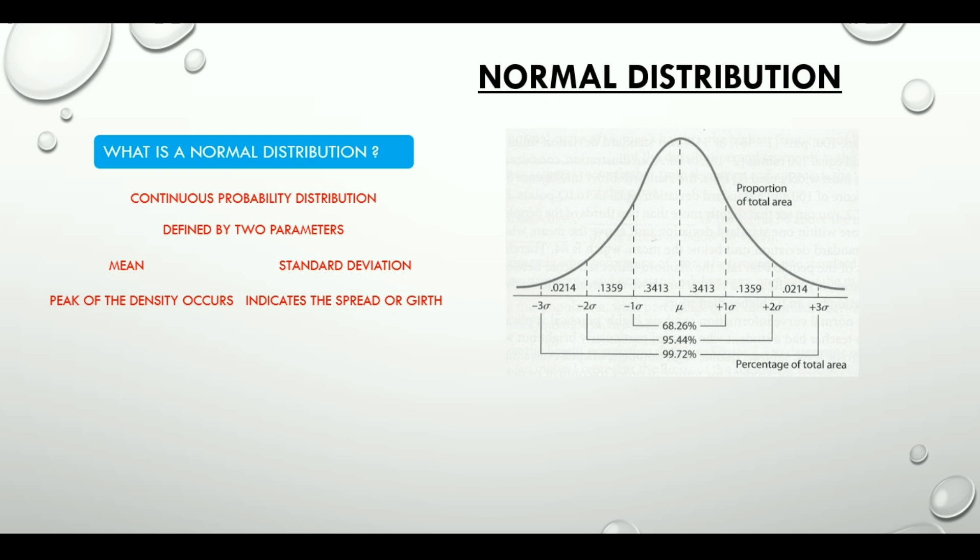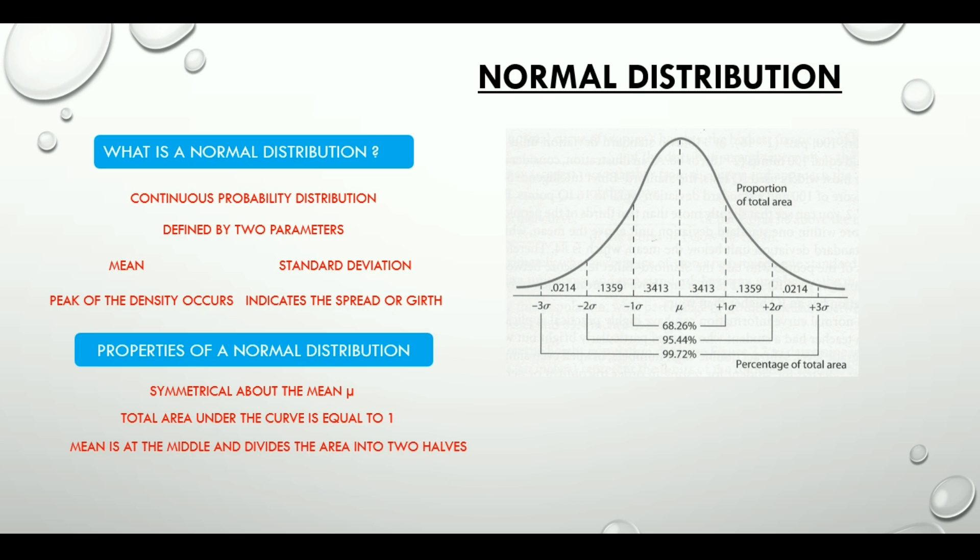Now let's look at the properties of a normal distribution. It is very important. So a normal distribution is symmetrical about the mean, and the mean is denoted by mu. We are aware of that. The total area under the curve is equal to one. The mean divides the area of the curve into two equal halves, which are mirror images of one another.